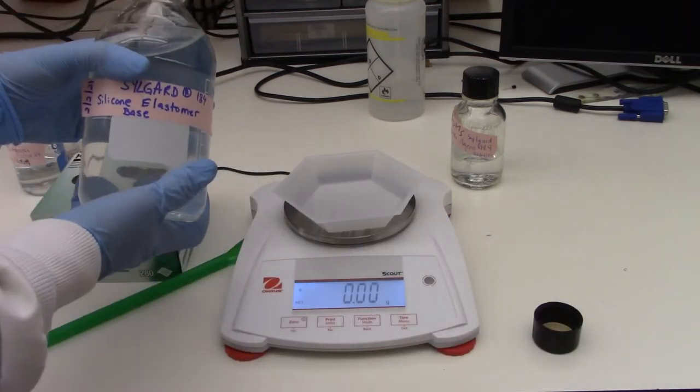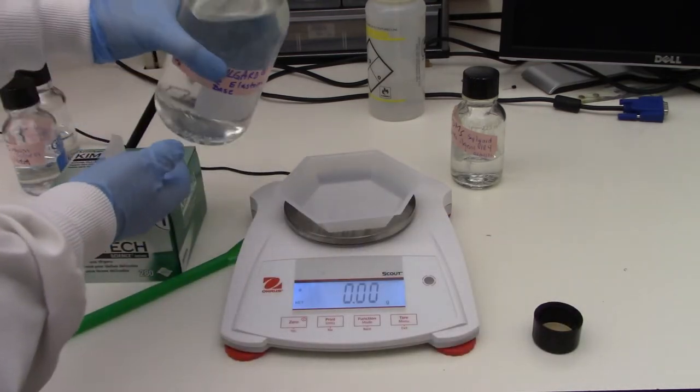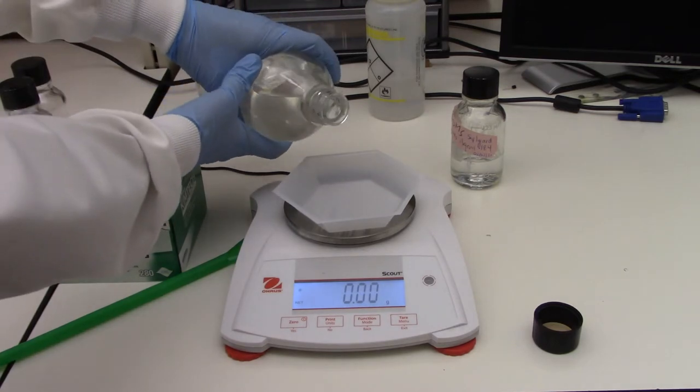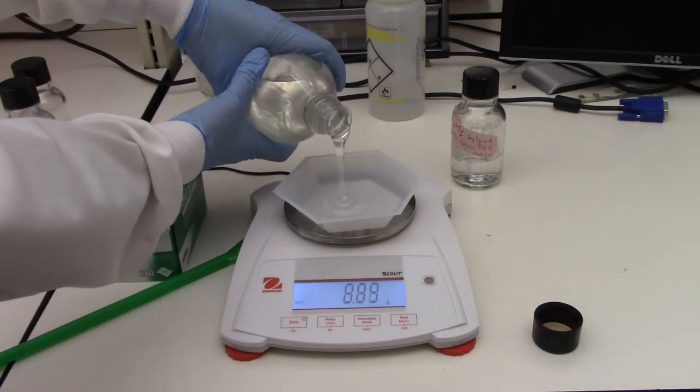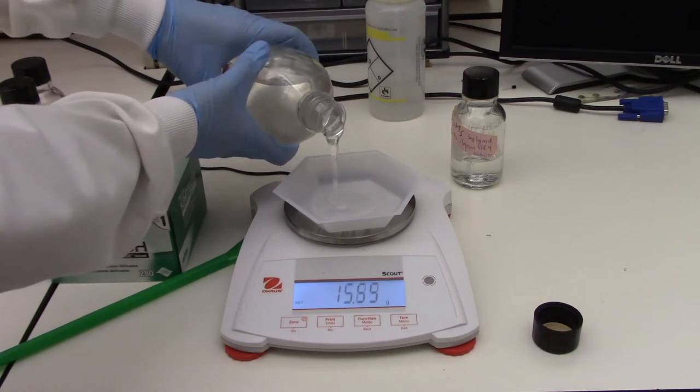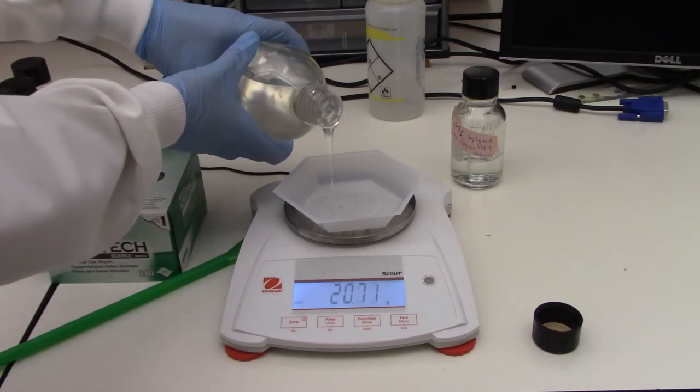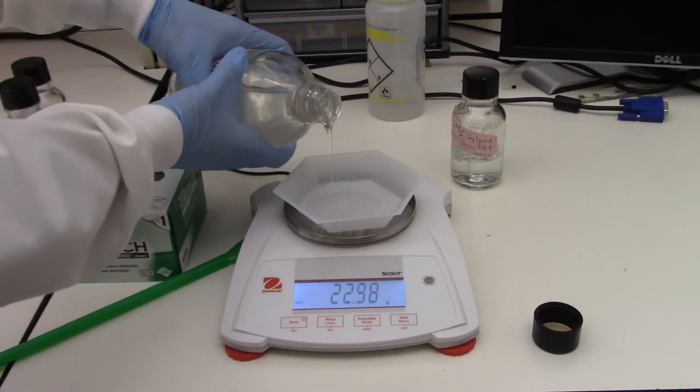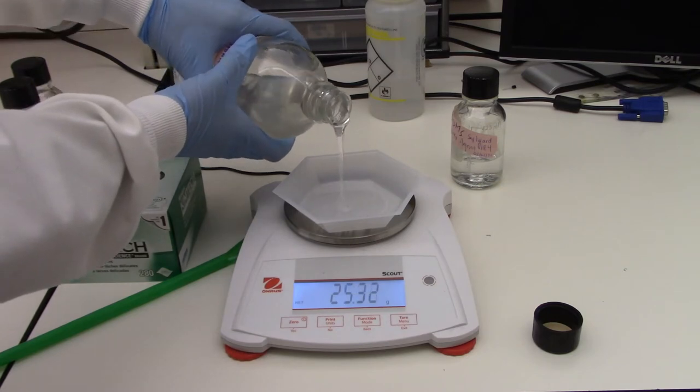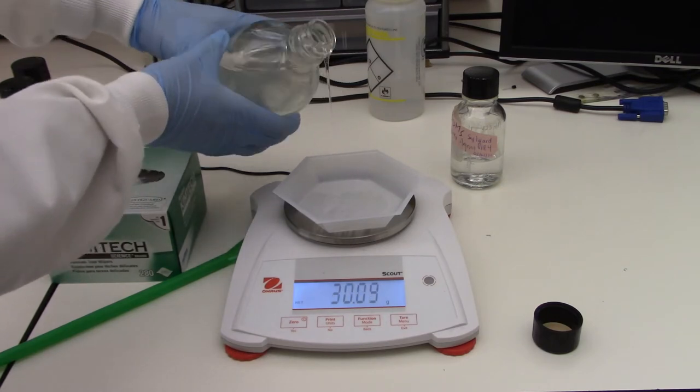When you're pouring this, this PDMS base is a very viscous liquid. You can see it's going to come out kind of more with the consistency of honey. And then as the numbers go up, I'm going to kind of watch it as it gets close to 30 grams.